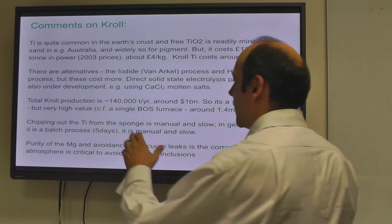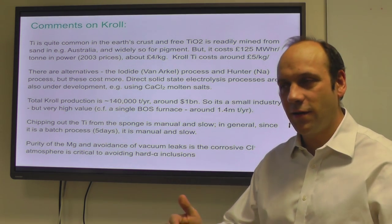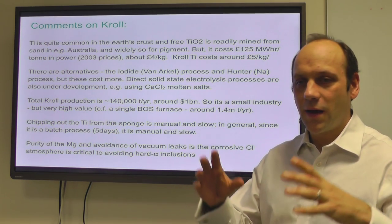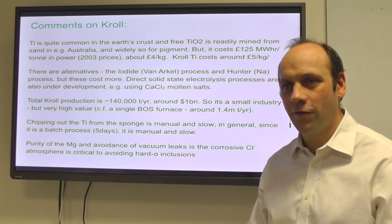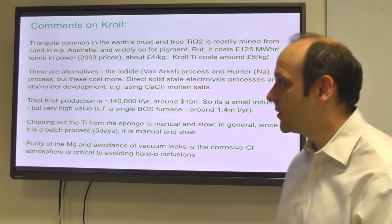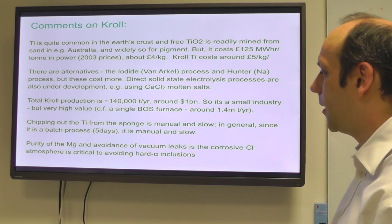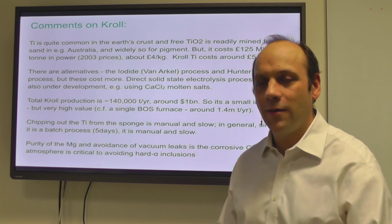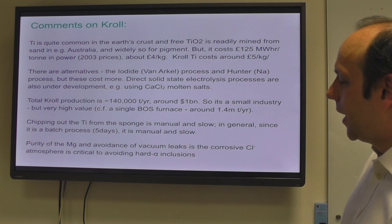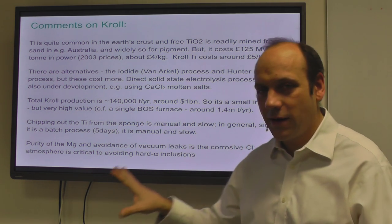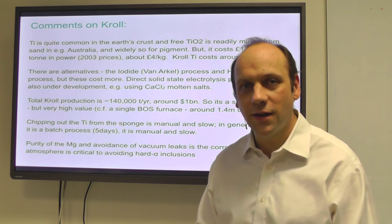One thing about the Kroll process is that it's a batch process that takes about five days. When you open up the retort, you have to section off the outsides of the sponge and put those away for armor or chemical plant use. It's only the very core that's useful for electronics and aerospace. That's chipped out manually and goes through a grading, sorting, and crushing process prior to recompacting it back into an ingot which you melt. The critical thing is the purity of the magnesium and the avoidance of vacuum leaks in the process, which is critical to avoiding hard alpha inclusions.